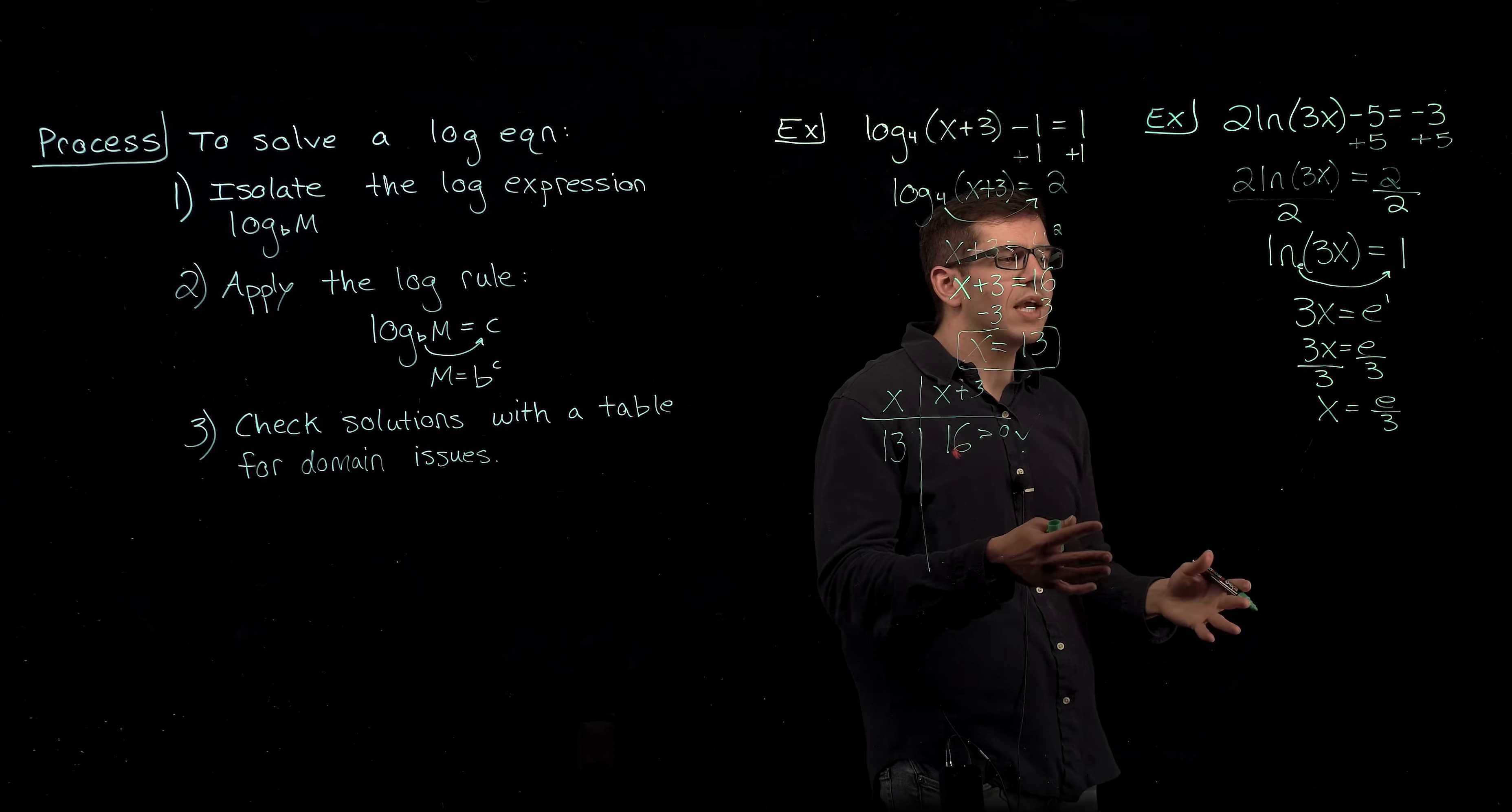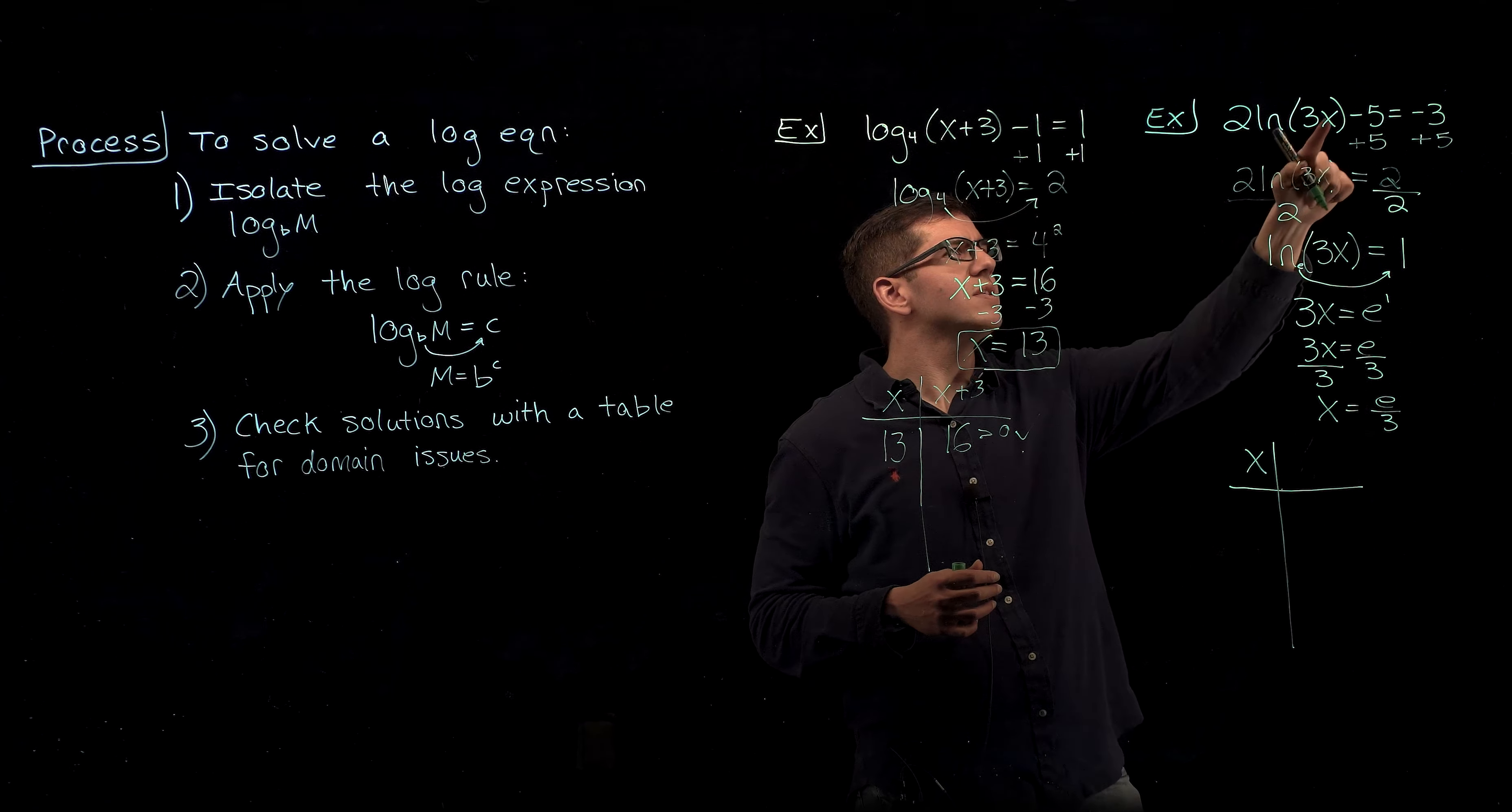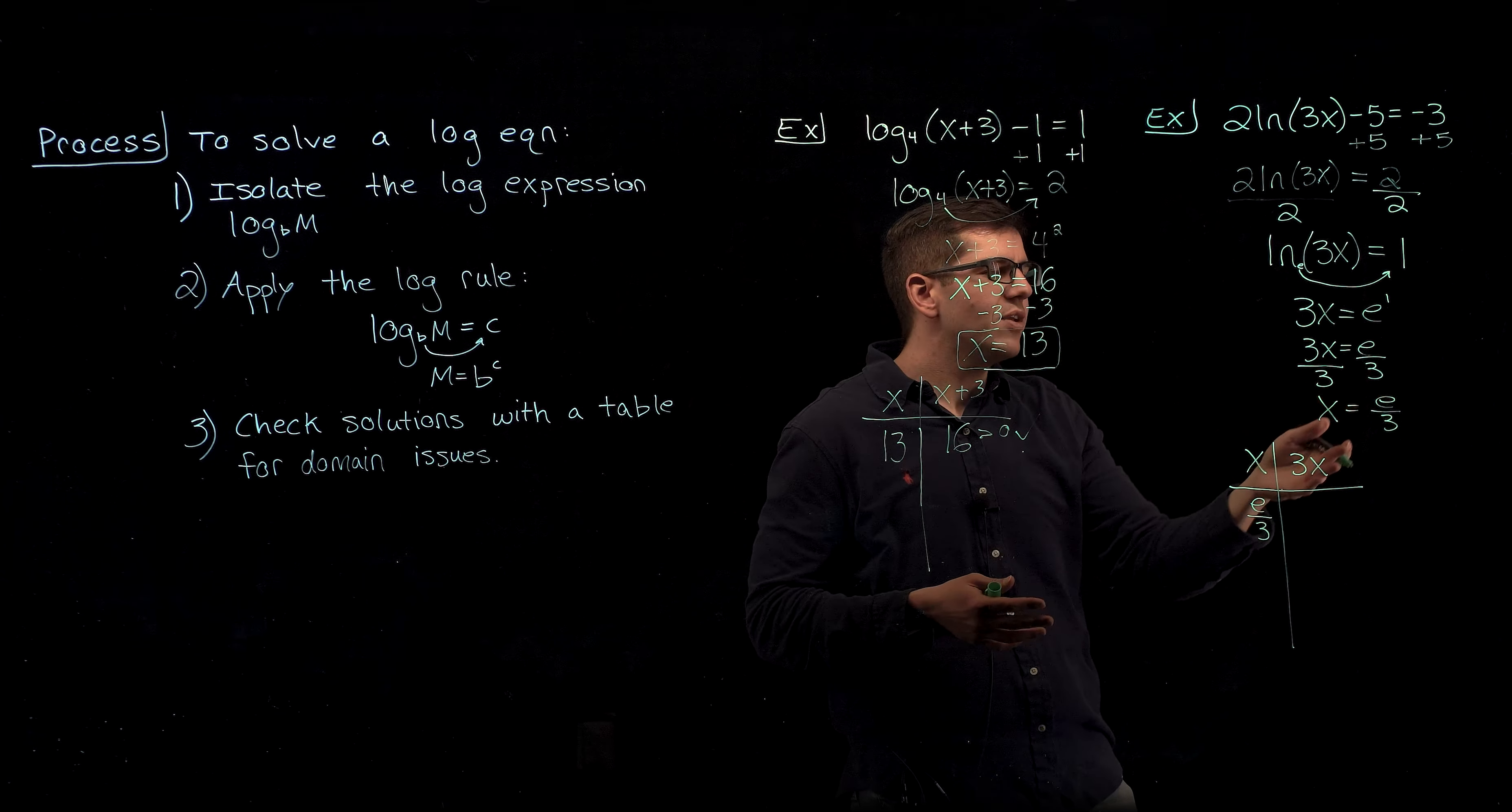You might think that we'll need a calculator to check this with our table, but it's actually going to work out very nicely. Because when we make our table, we're checking our x value inside of the value that was inside of this natural log, that's 3x. So we're plugging in e over 3. If we were to plug that into a calculator, we'd find an approximation, but this is the exact answer, so we're just going to use that.